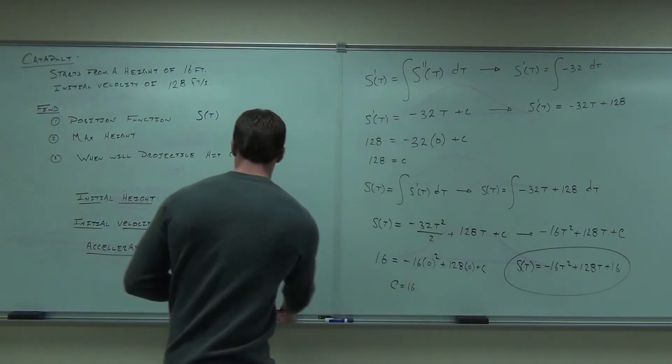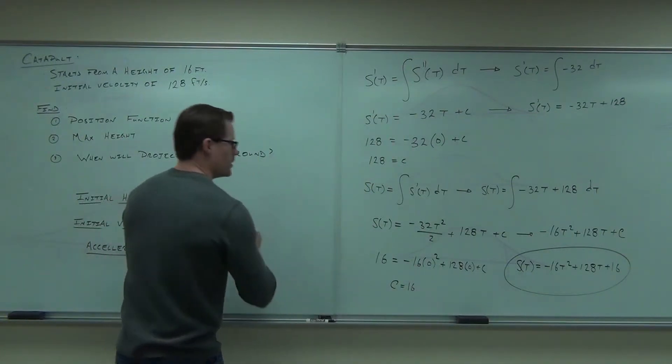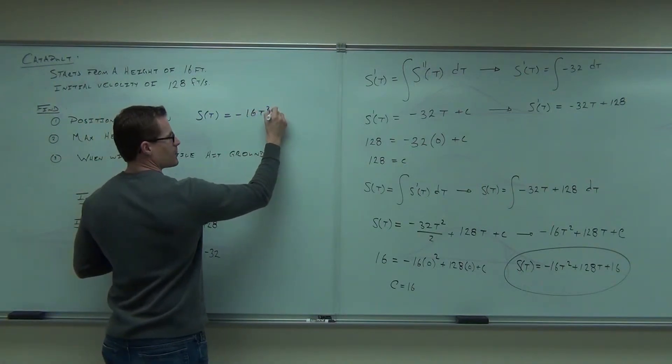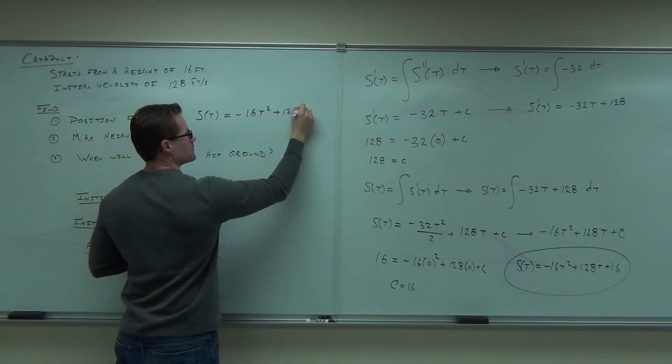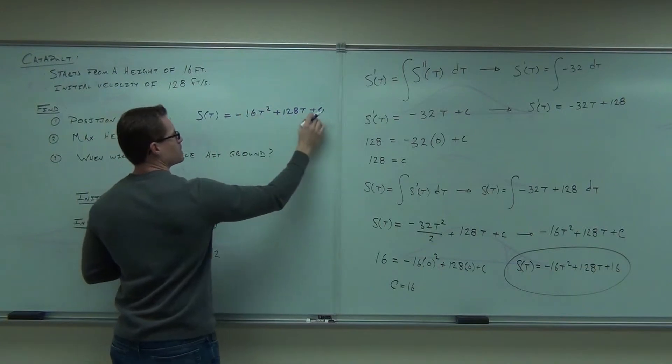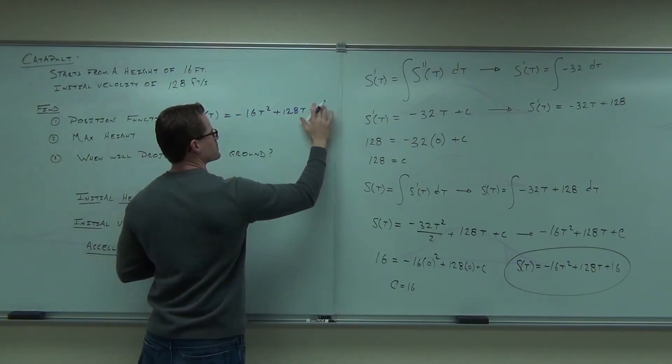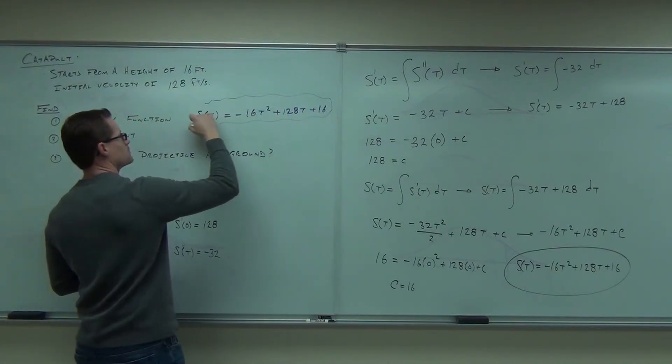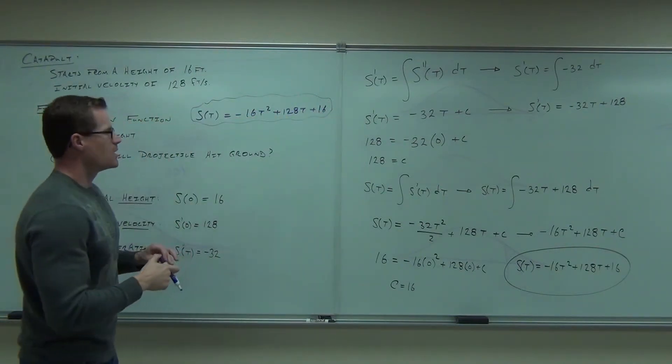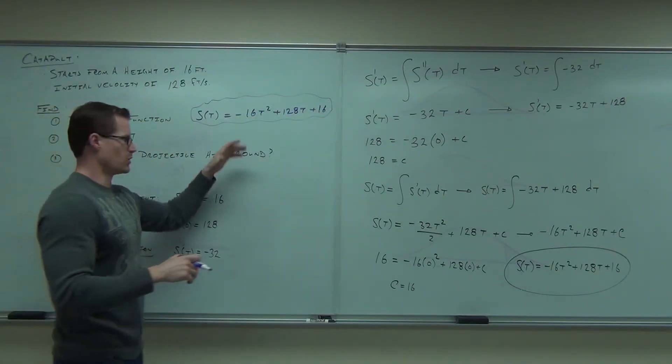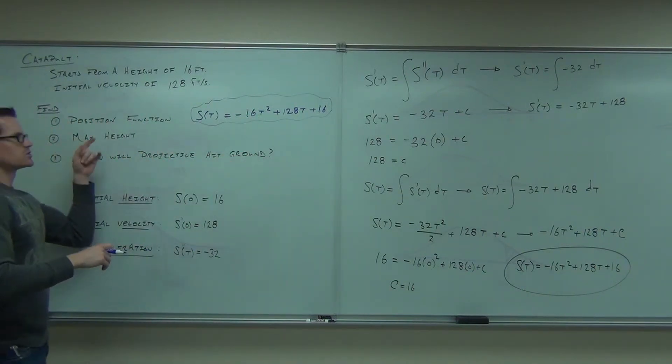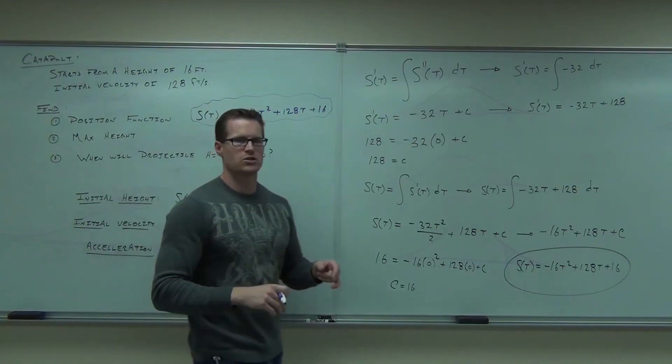Now, we're almost done. We have the first part. We've got this. We know that this is equal to negative 16t squared plus 128t plus c. In our case, c was 16. Okay, part one done. We can do part two and three at the same, well, not the same time, but any time that we want. How would you do part two? Let's talk about that.